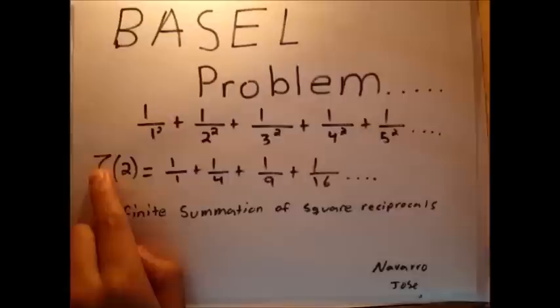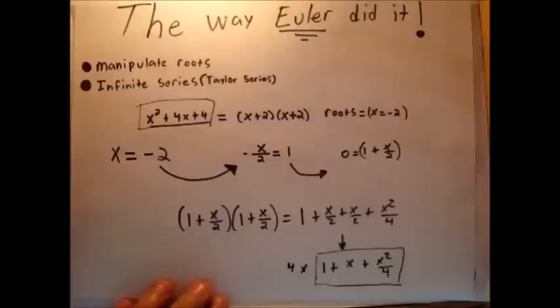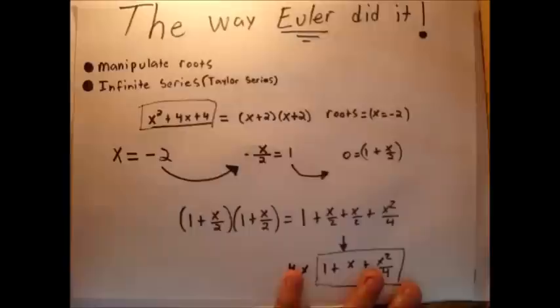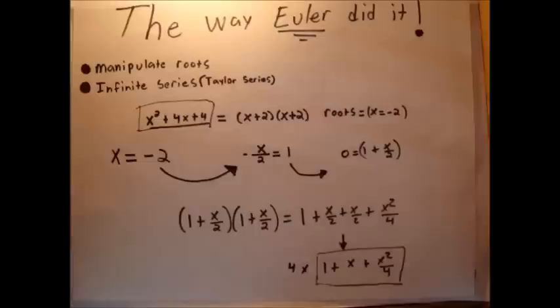The first person to solve this was actually Euler, and I'll show you the way that he did it. In order to understand his approach, you're going to need two things: the manipulation of roots, and the infinite series — specifically the Taylor series. We're only going to need to know one Taylor series result, so it won't be that deep.